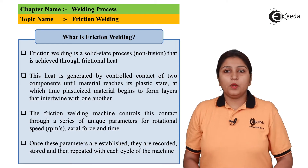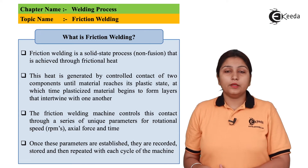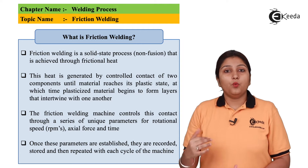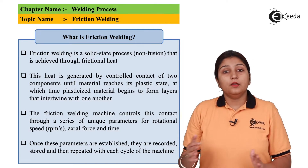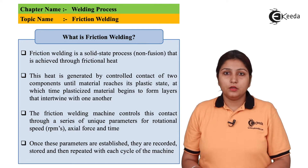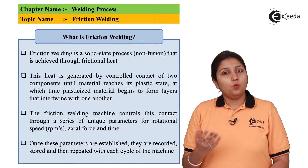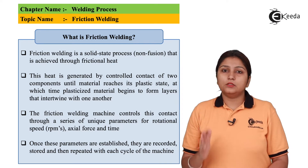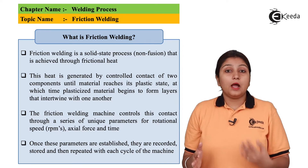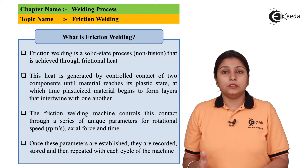Friction welding is a solid state welding in which welding is done using frictional heat. Basically what happens is one part is stationary and the other part is rotating at high speed.